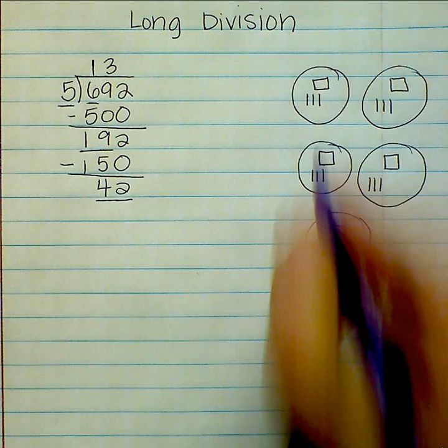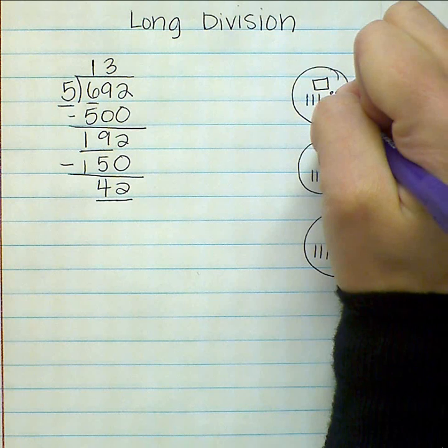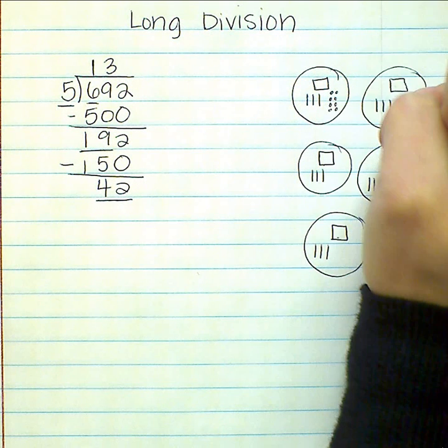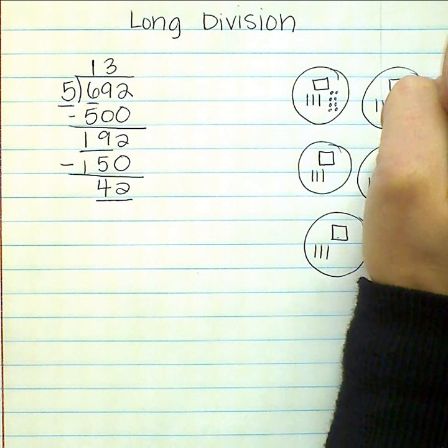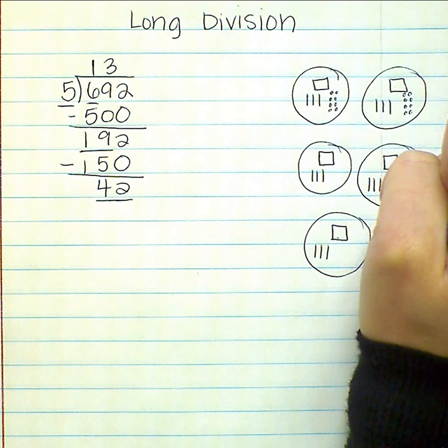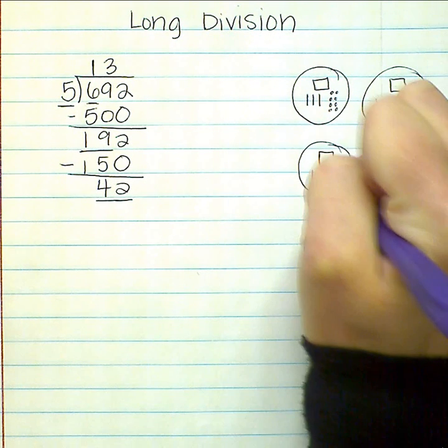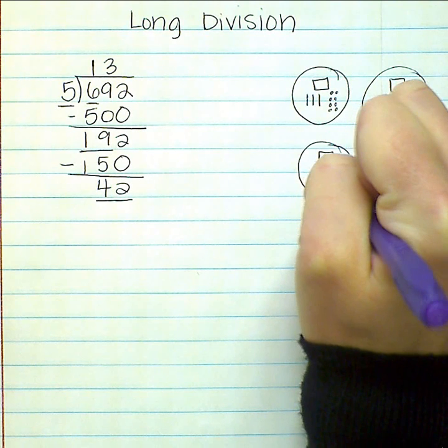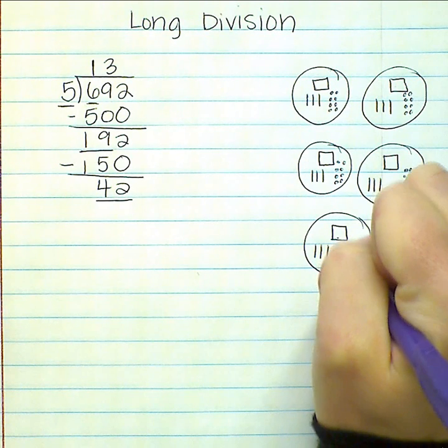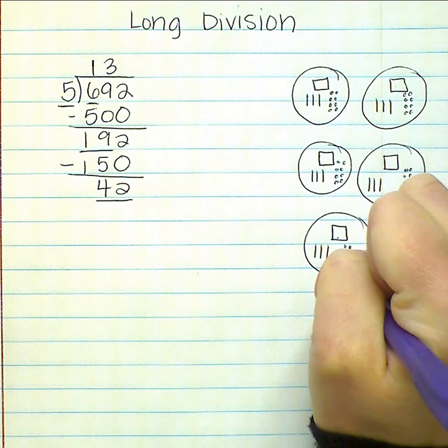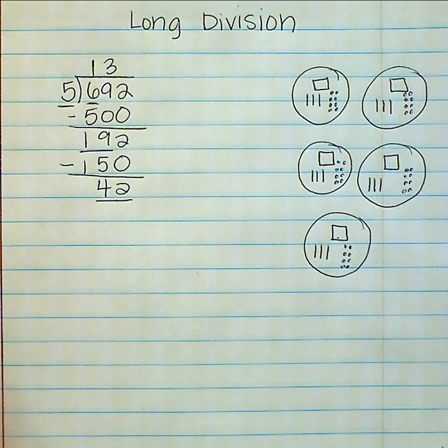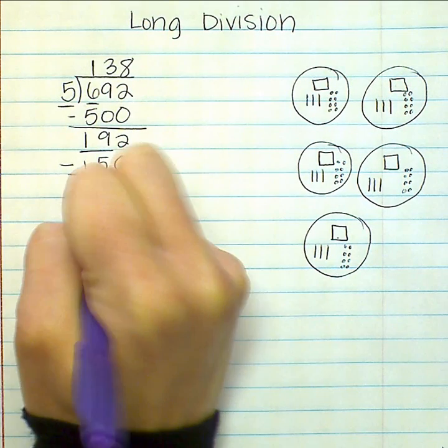I can put eight ones into each group. The dots represent ones. Eight ones in each group. I used forty ones altogether.